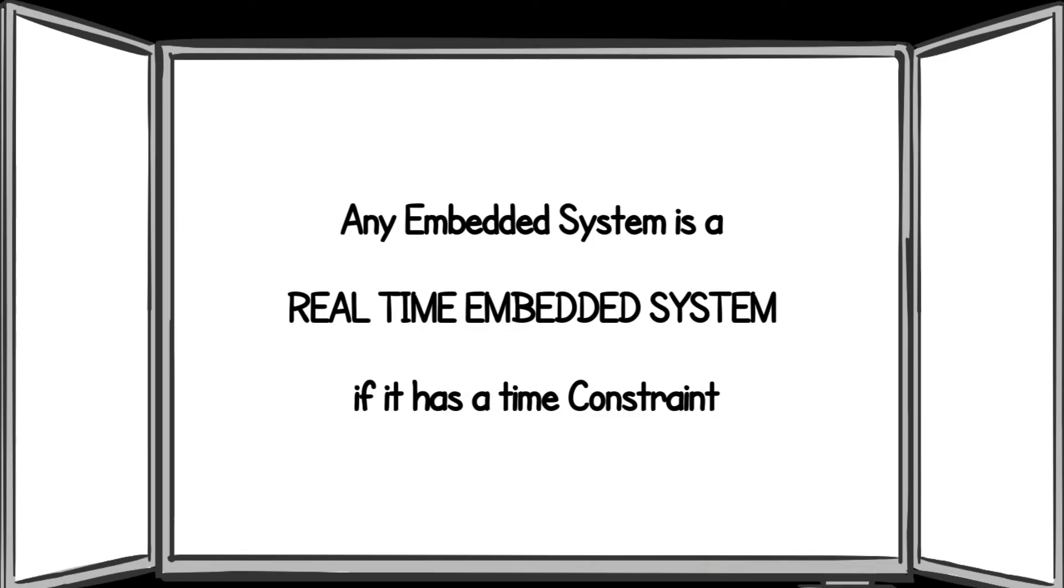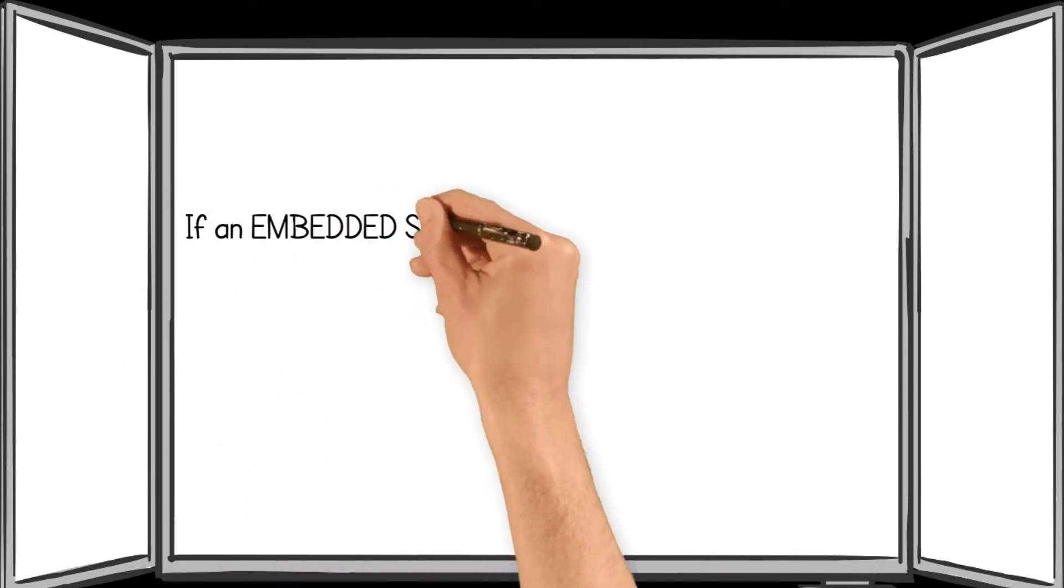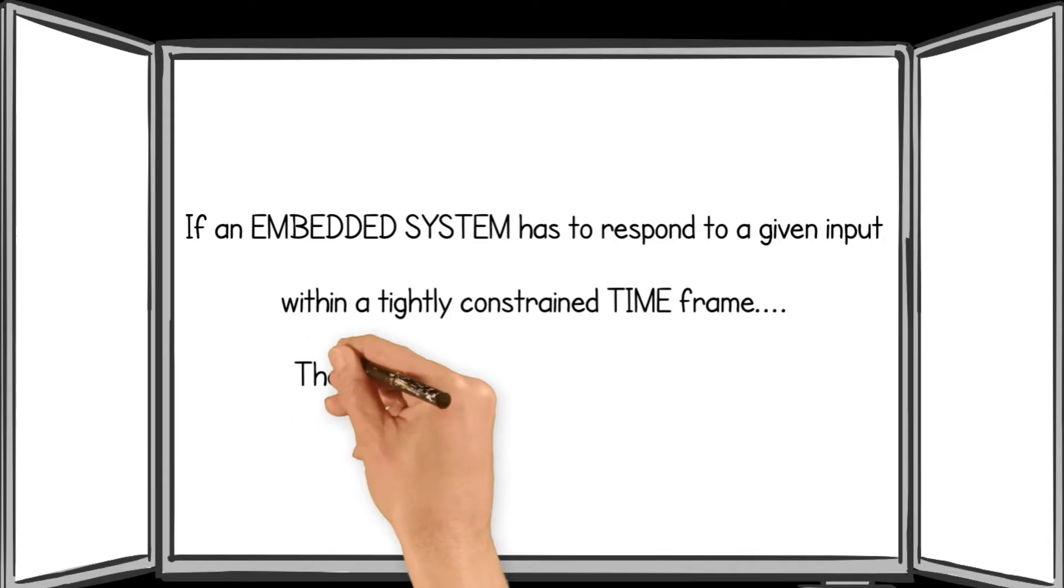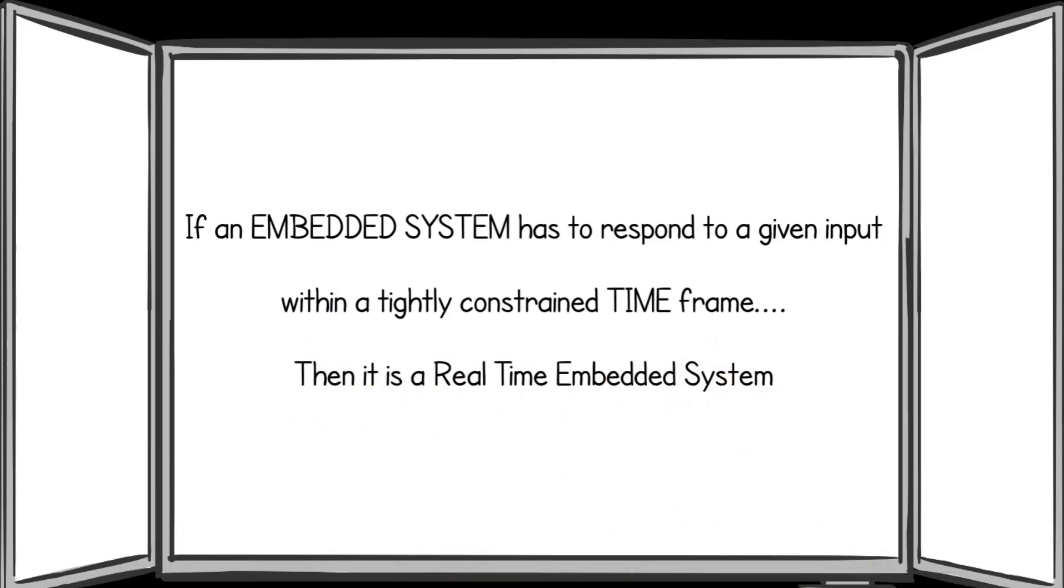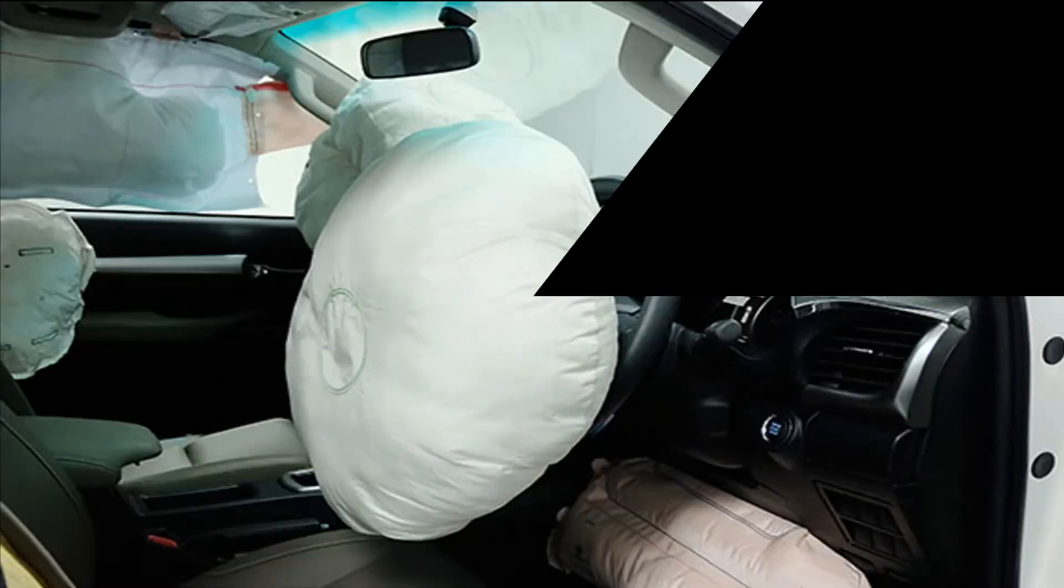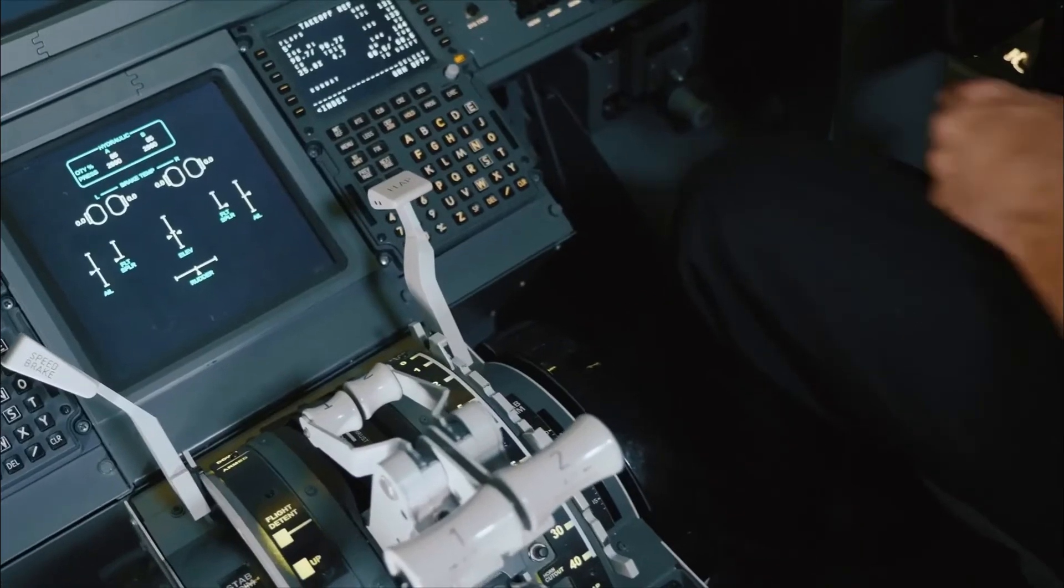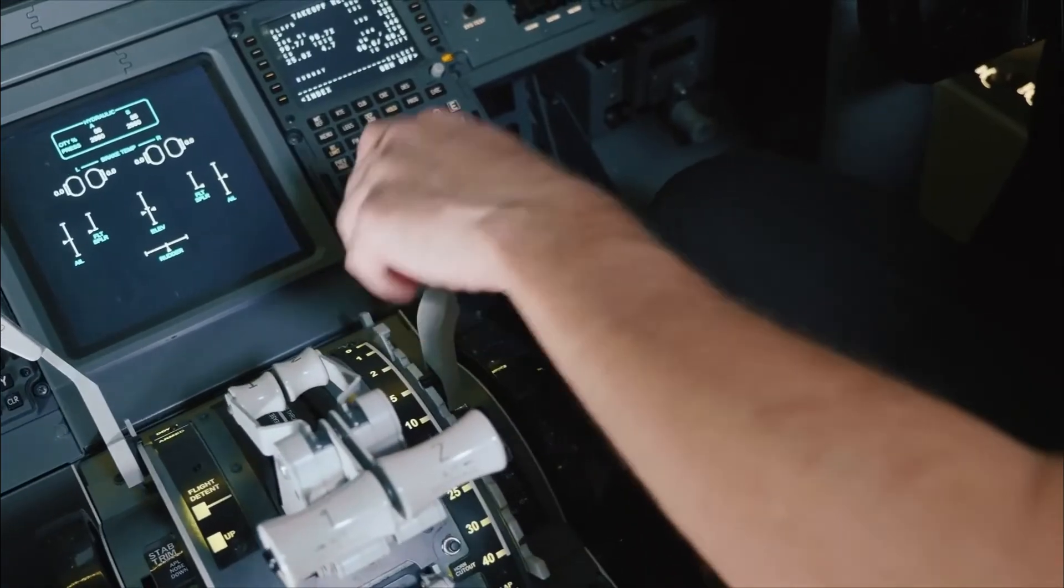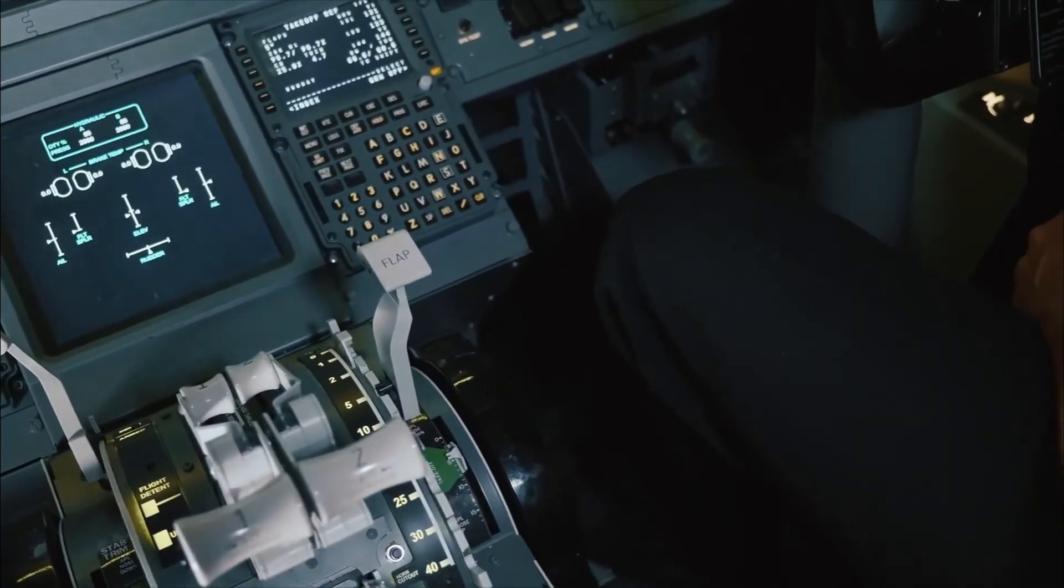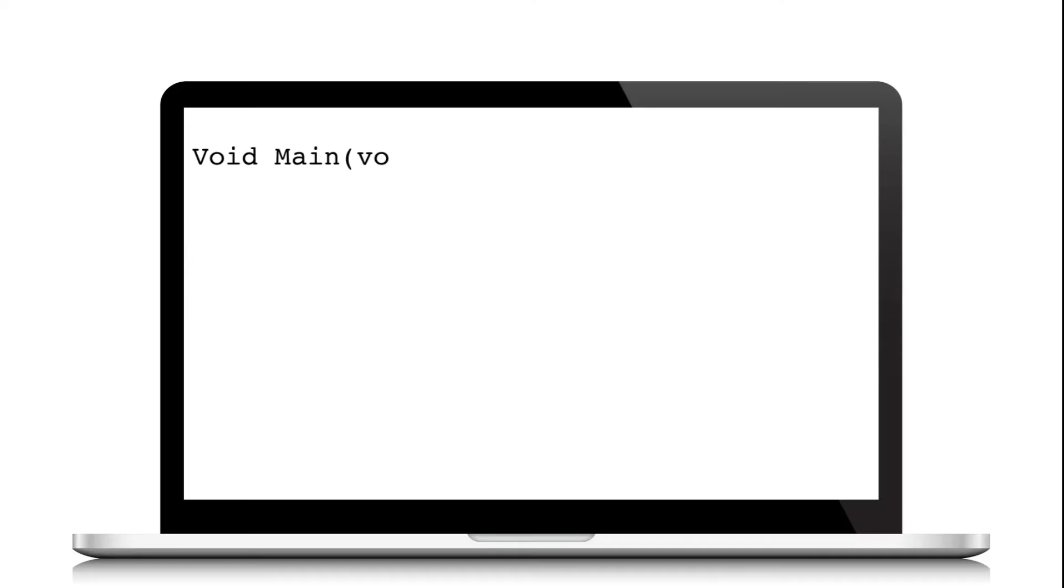If an embedded system has to respond to a given input within a tightly constrained time frame, for example, an airbag system in a car or a flight control system in an aircraft can be considered real-time embedded systems.